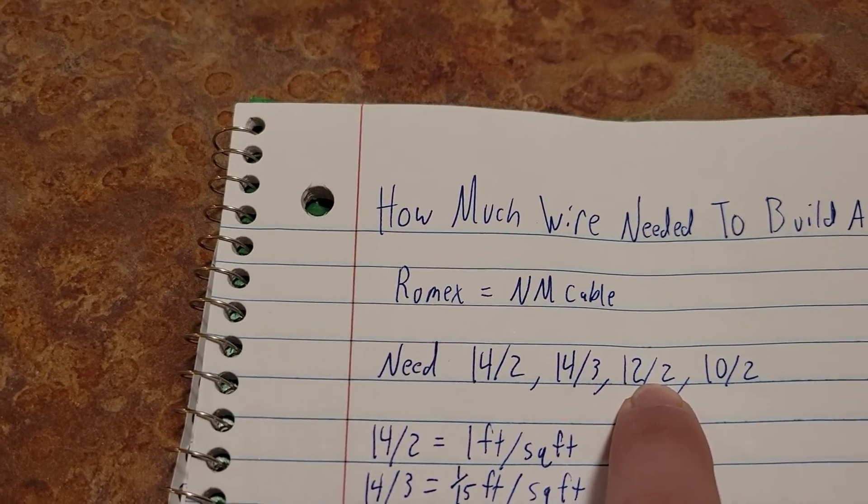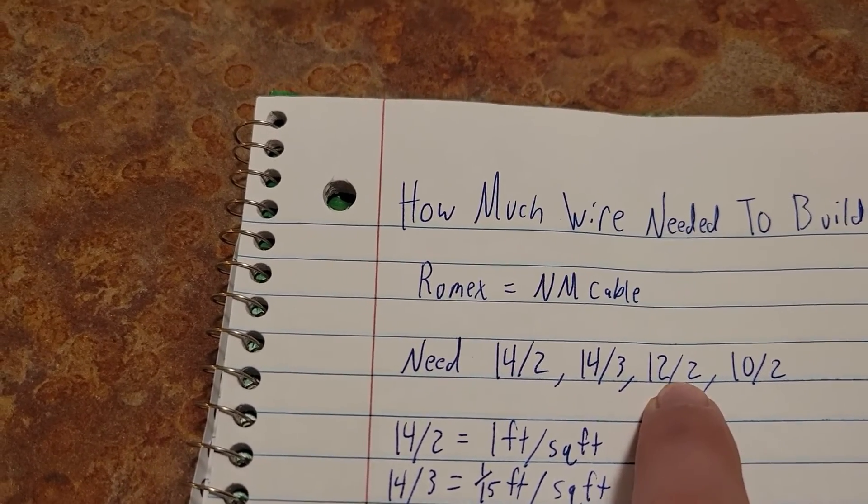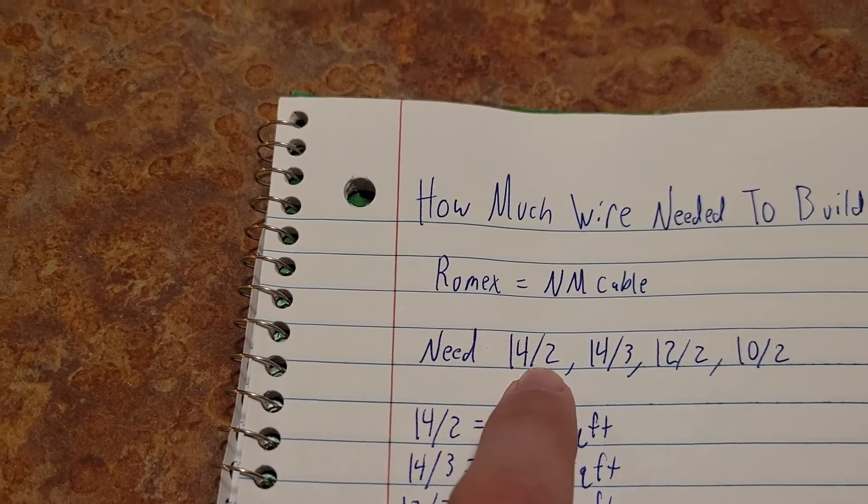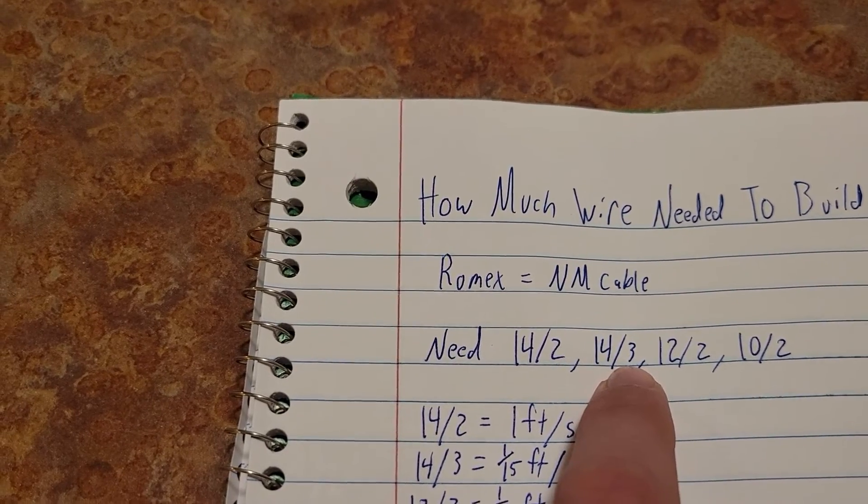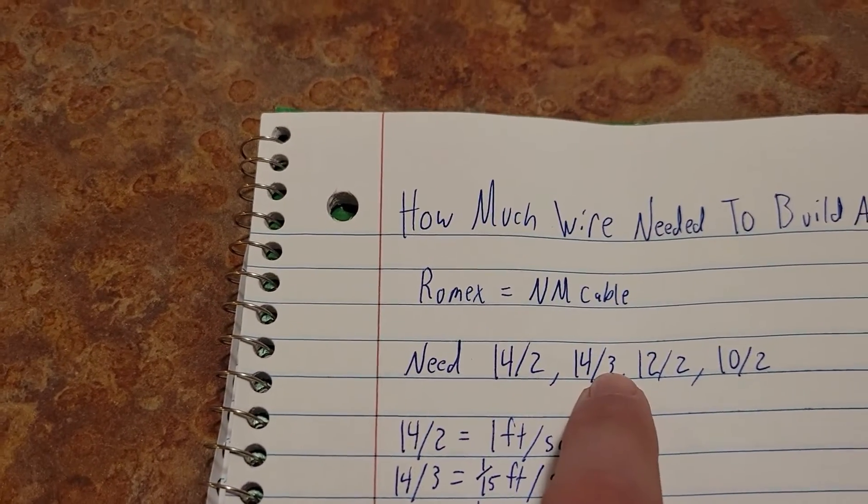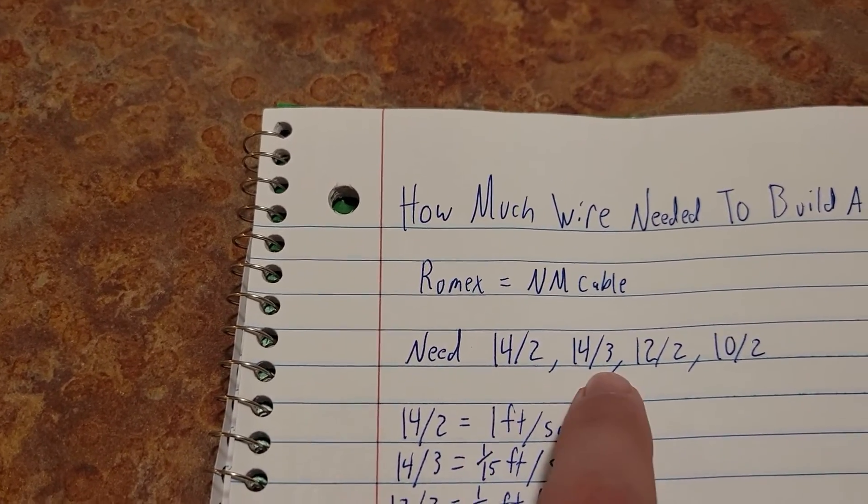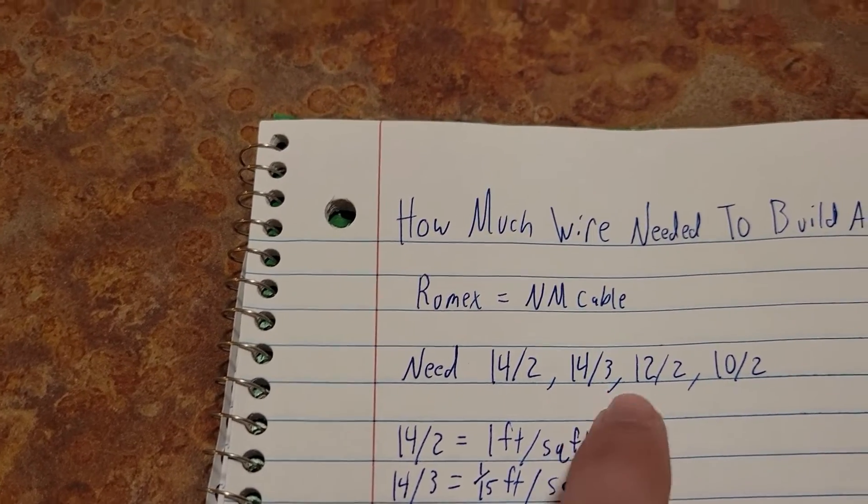However, there is absolutely nothing wrong with using 14/2 and 14/3. This is the most cost efficient way. This is the way I wire my houses, so that's the way I'm going to show you today.